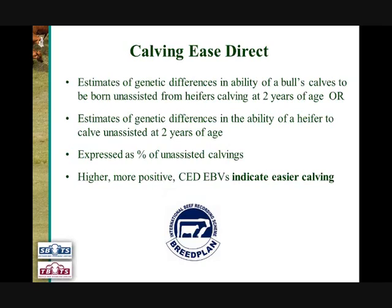The Calving Ease Direct EBV, in the case of a sire or a bull, estimates the genetic differences in the ability of that bull's calves to be born unassisted when he's joined to heifers who are planned to calve at two years of age. In the case of females, it provides an estimate of genetic differences in the ability of that female or heifer to calve unassisted herself at two years of age.